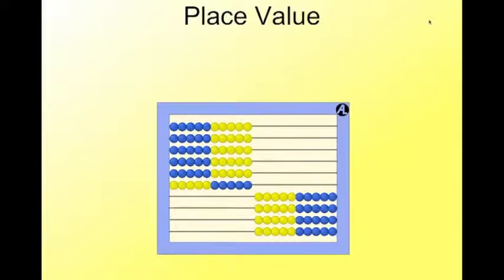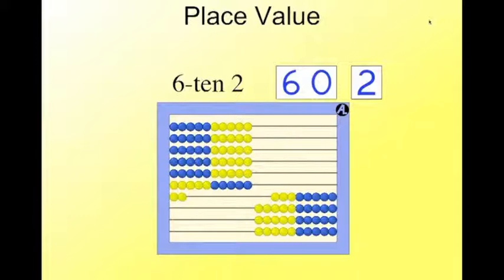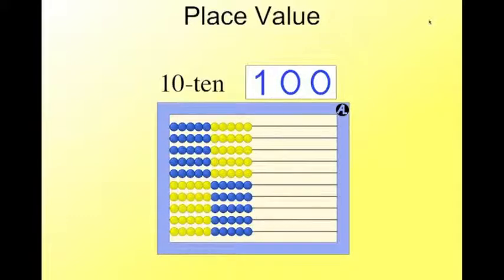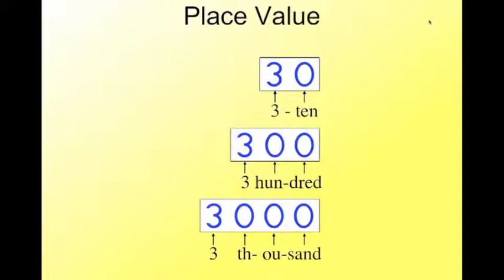So this would be 6, 10. And now I have 6, 10, 2 written as 6, 10, 2. 10, 10. There's all the beads. 10, 10s. Also known as 100.